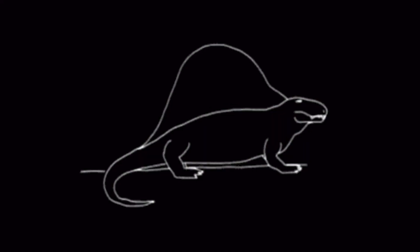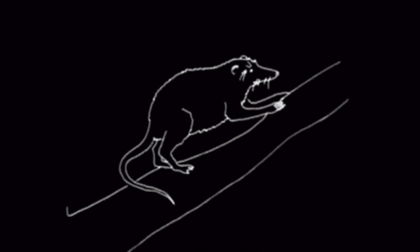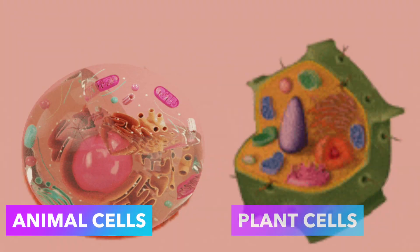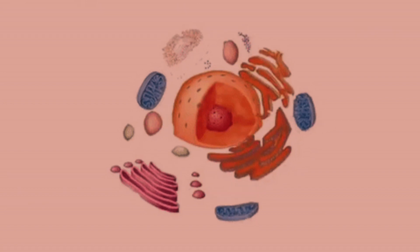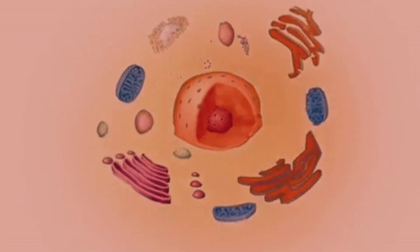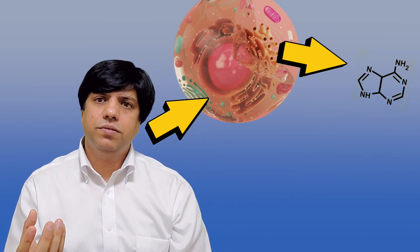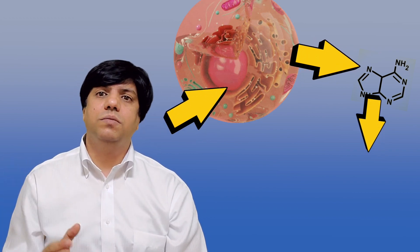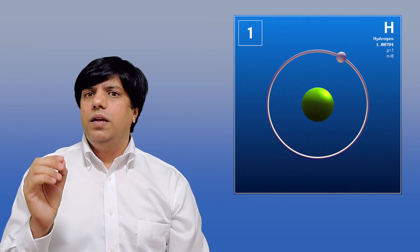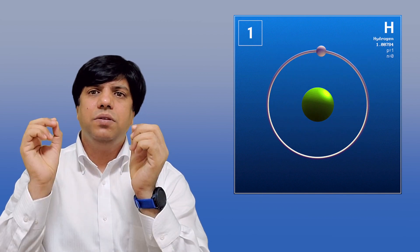Everything is composed of something. To understand it in the easiest manner, let's start with our body. The human body is made of cells — animal cells. Those cells are made of different types of proteins, fats, and different kinds of molecules. So our bodies are made of cells, cells are made of molecules, and a molecule is made of atoms.